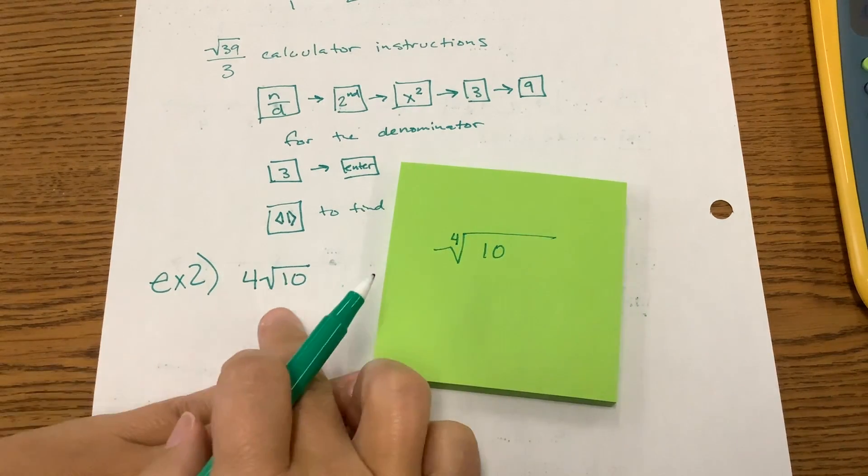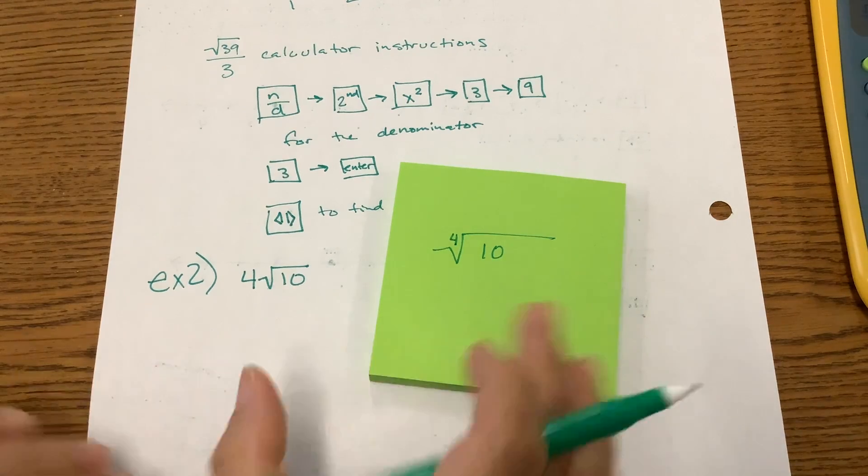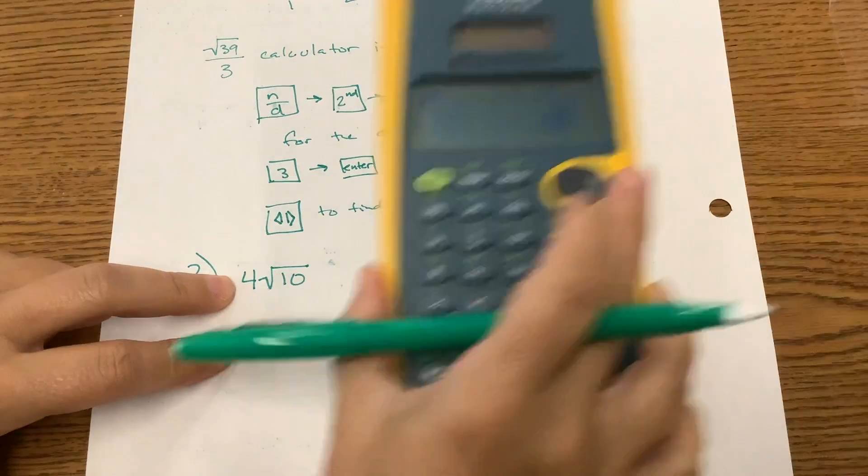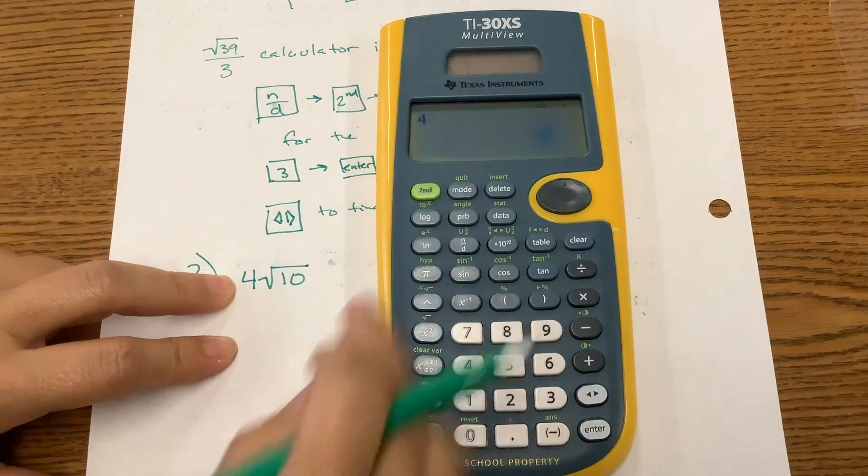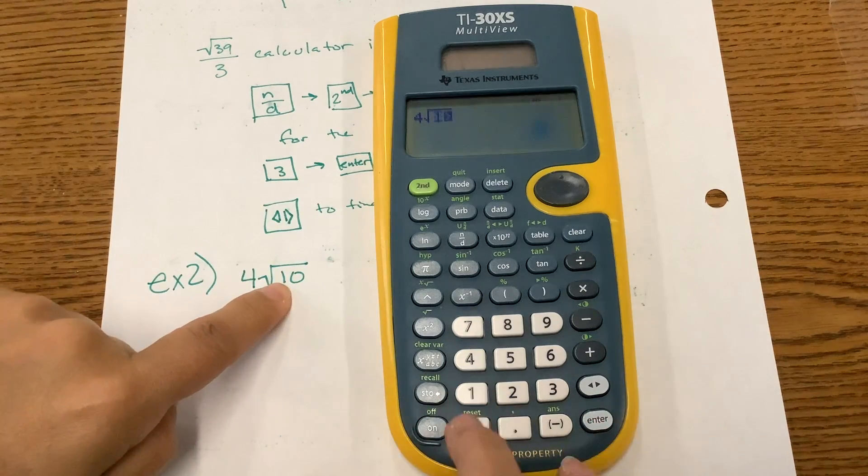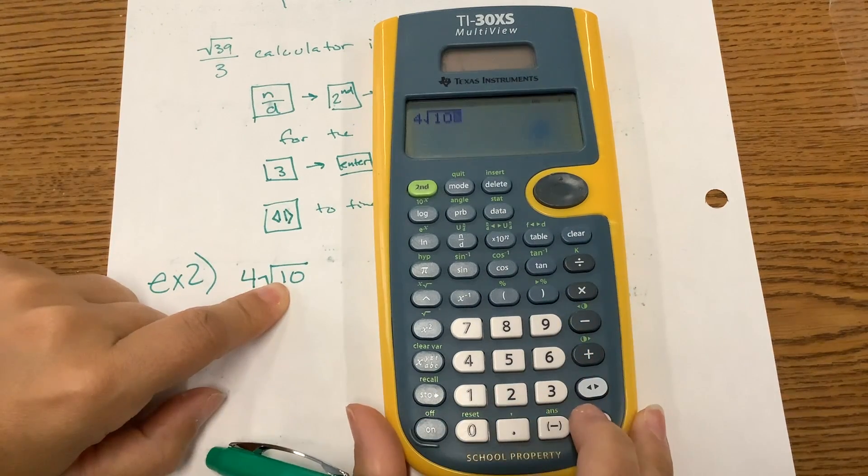This is just 4 times the root of 10. To put this into the calculator, you just type it in exactly as it looks. So you're going to press in a 4, then second, x squared, and then underneath that radical, you're going to put 10. You're going to evaluate it by pressing enter.